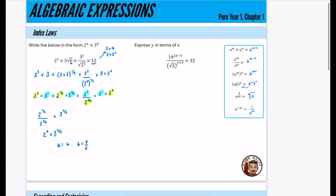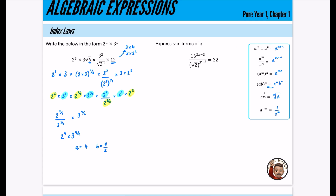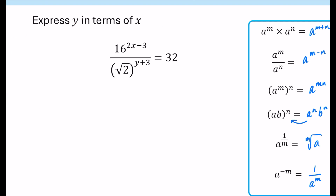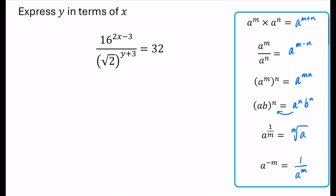That was a bit more challenging than typical textbook questions. Next, we have this equation where we need to express Y in terms of X. It looks complex, but the key is noticing we have four, sixteen, and thirty-two — all connected by the base of two. Two squared is four, two cubed is eight, two to the fourth is sixteen, and two to the fifth is thirty-two. The trick is to rewrite sixteen and thirty-two with base two so we can compare all the powers.